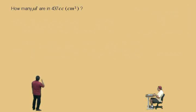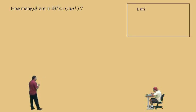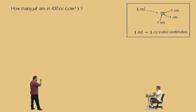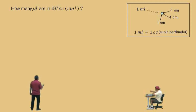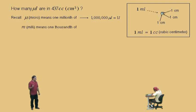Let's do one more. How many microliters are in 437 cubic centimeters? Let's look at the picture. One milliliter — it's about that big, it's really small. That cube is 1 centimeter by 1 centimeter by 1 centimeter, so 1 milliliter is actually equal to 1 cubic centimeter. 1 cubic centimeter is volume — centimeters cubed, length times width times height — that's how much 1 milliliter is. To do this problem, recall: micro means one millionth of, so there are 1 million microliters in 1 liter. Milli means one thousandth of, so there are 1,000 milliliters in 1 liter.